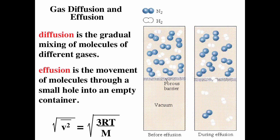Diffusion and effusion depend on the root mean square speed — the bigger the speed, the faster the rate. Diffusion is the gradual mixing of molecules of different gases. If you let off a little bit of CO₂ in a corner of a room, eventually the CO₂ will go throughout the room — that's diffusion. Effusion is where you have a gas on one side of a barrier and a vacuum on the other side, and the gas particles effuse to the empty side. The bigger the mass, the smaller the root mean square speed, and the slower the rate of diffusion and effusion.